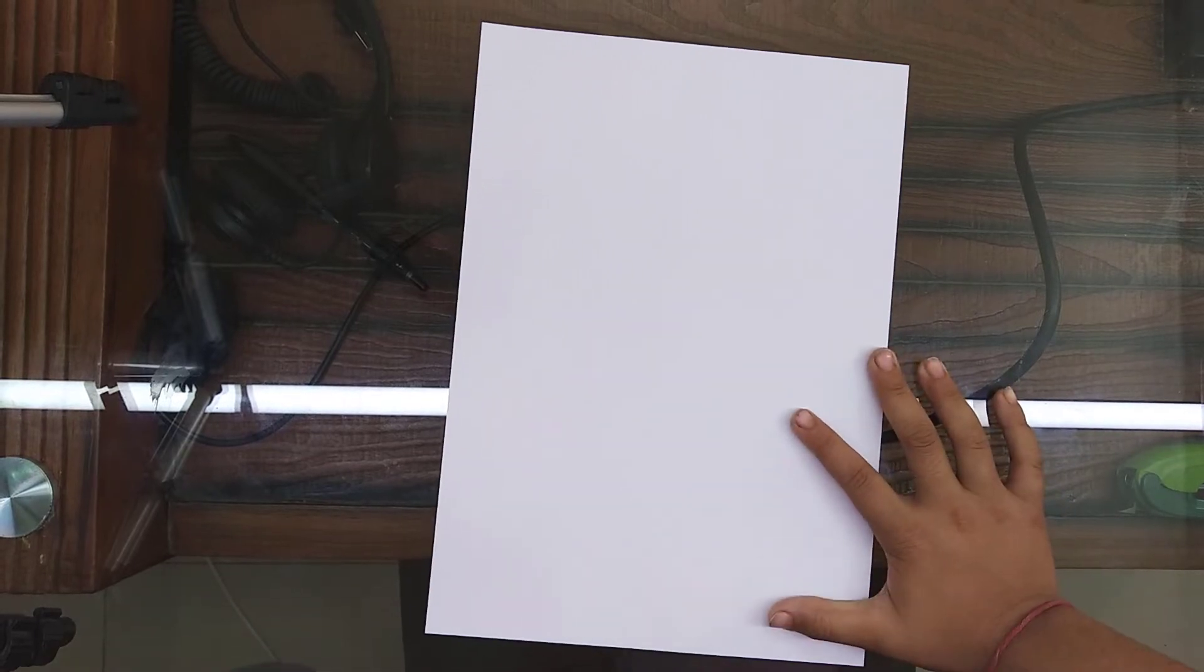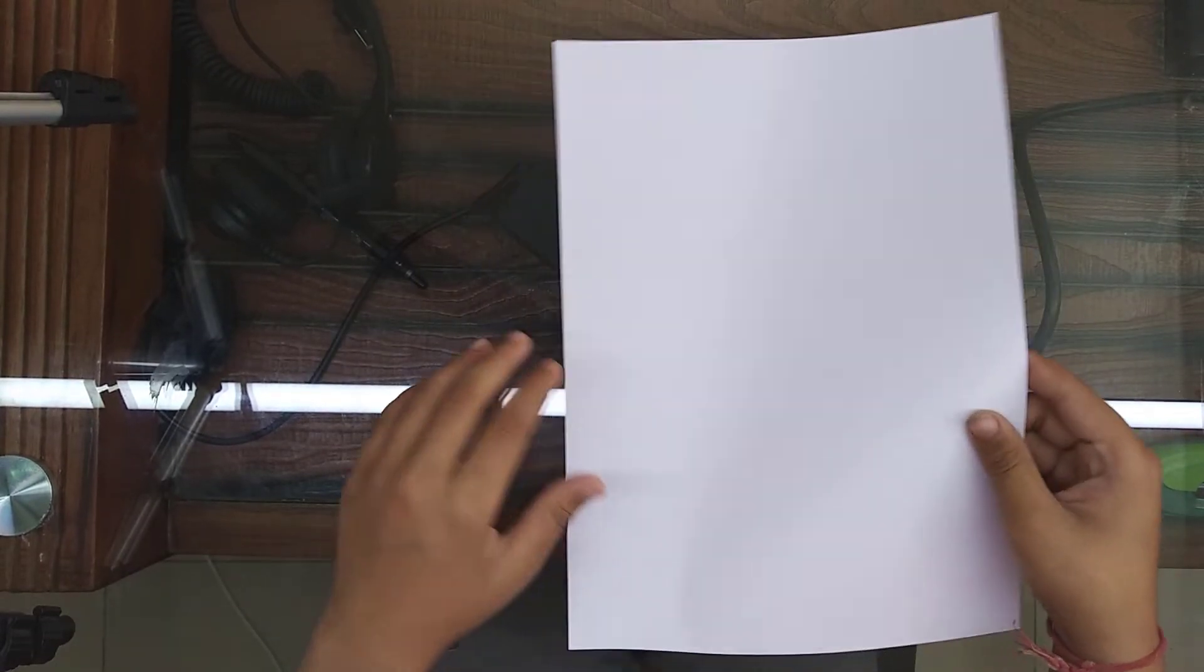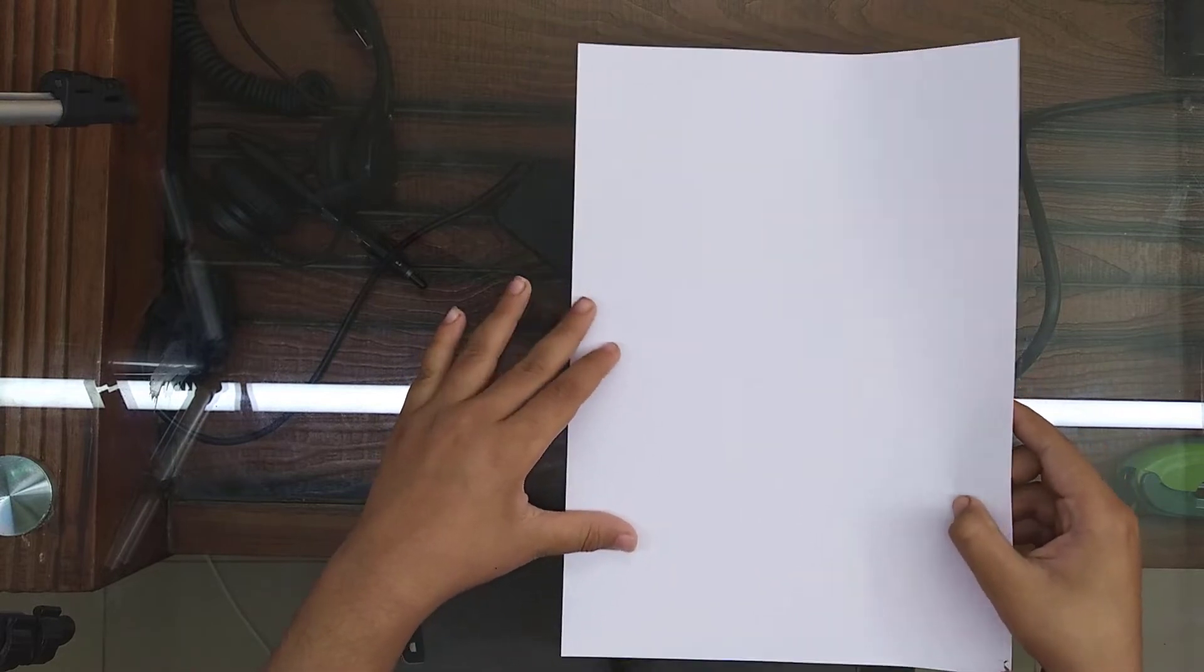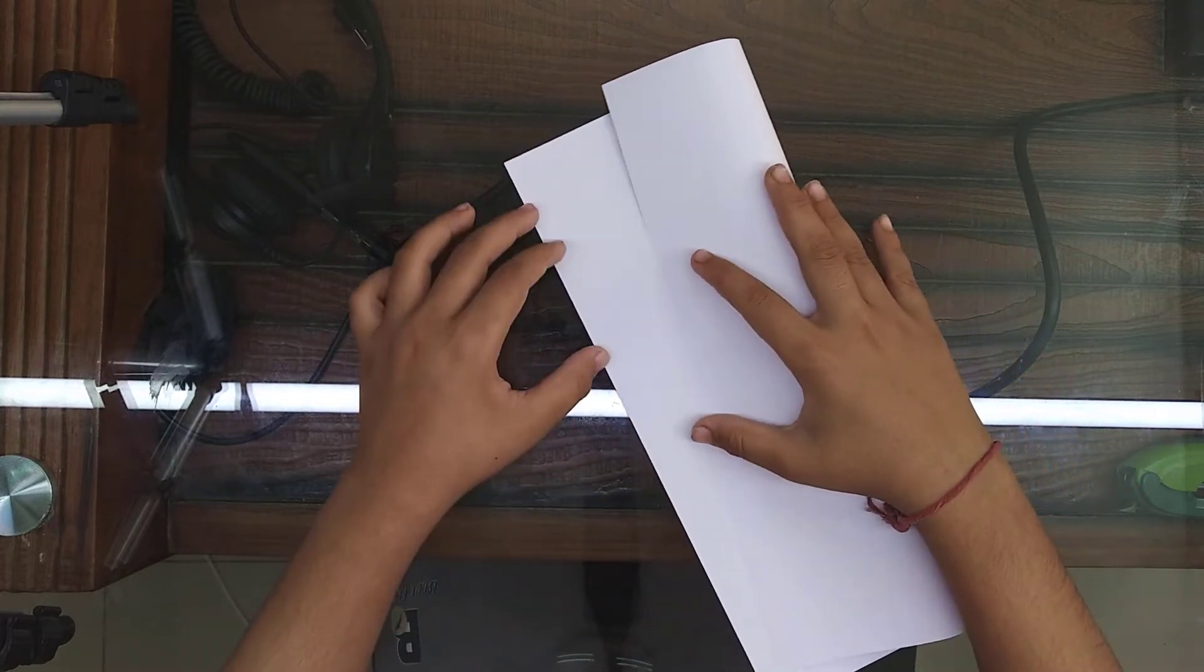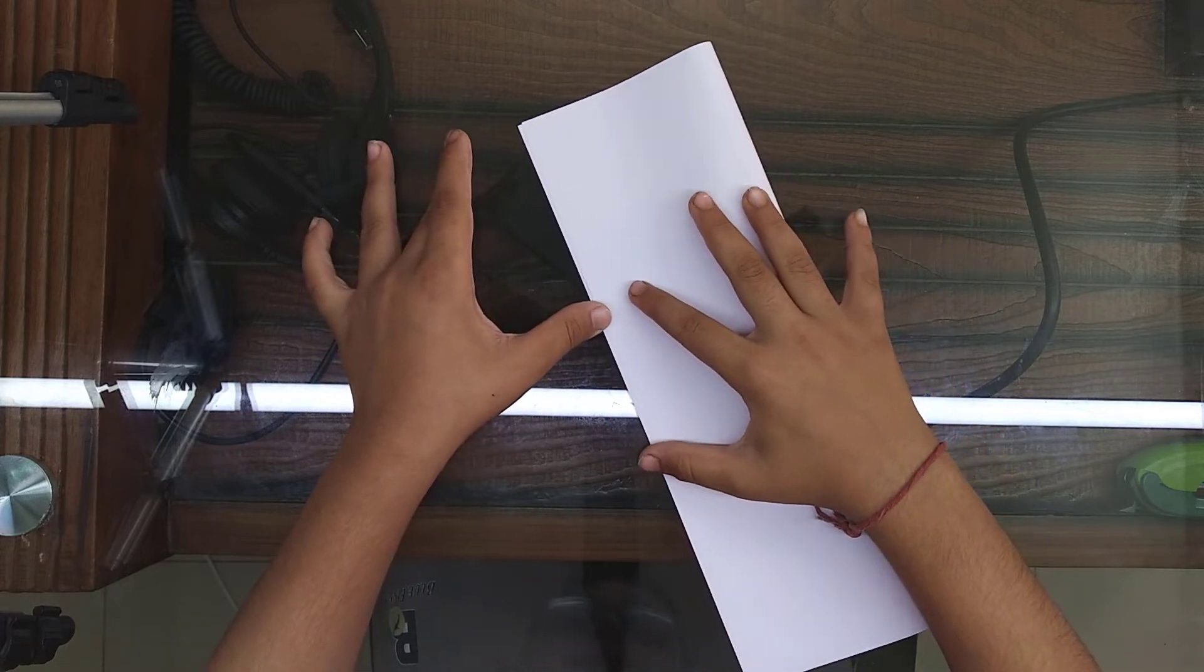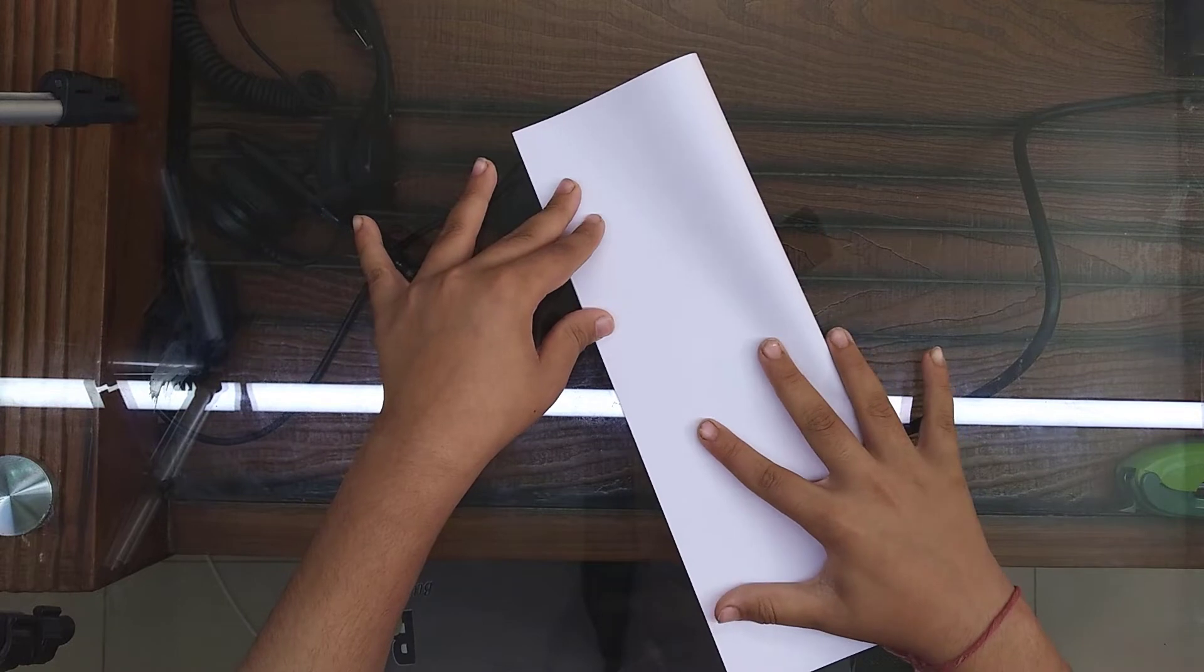Hi guys, now today we're going to make an aeroplane. Now let's start. First this is your paper, A4 size. Now you have to fold it like this, make sure all the corners are fine.